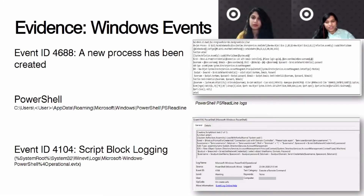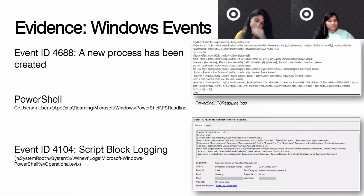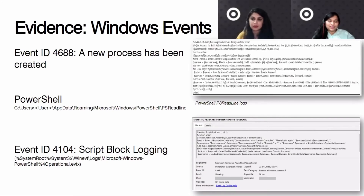At this point, our investigation is going to branch out into different directions. Depending on what command was executed in PowerShell, they may have downloaded a second-stage payload, established a C2 requiring a look into network logs, or in this particular case prompted for credentials and serially exfiltrated them. It's not within the scope of this presentation to cover every direction. The event IDs and registry keys covered so far should give you the needed information on how to start analysis on bad USBs and find the initial steps.